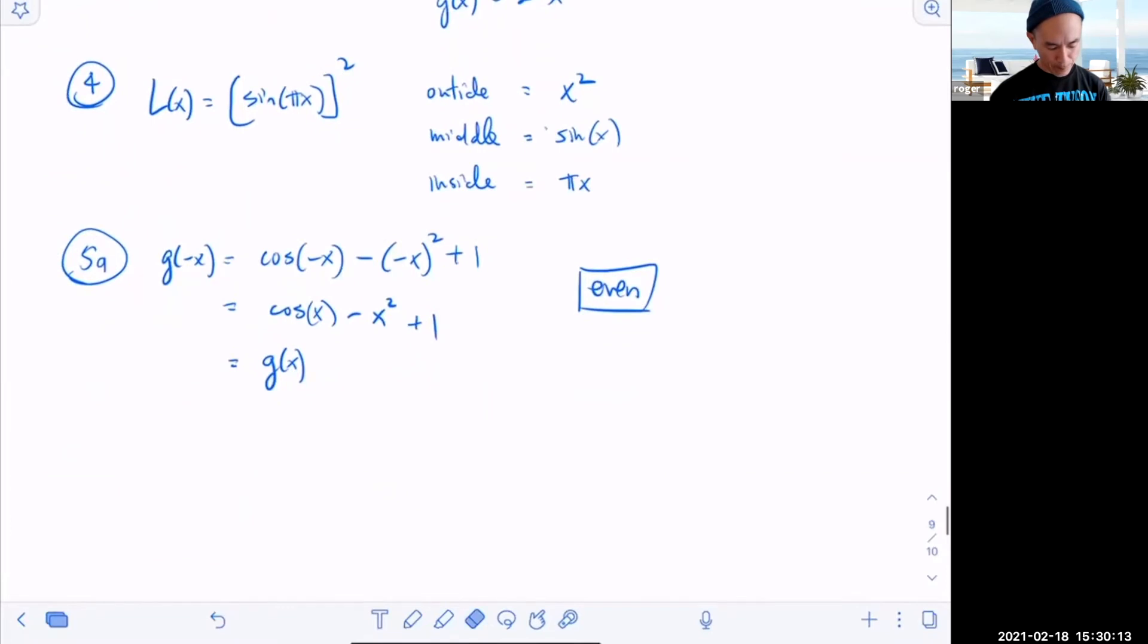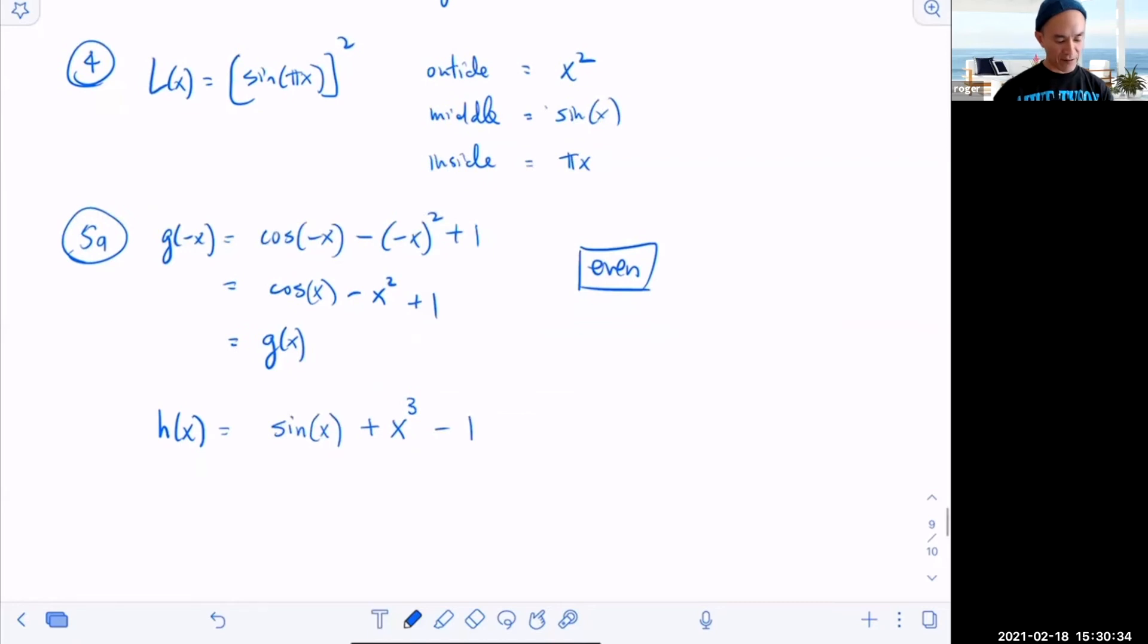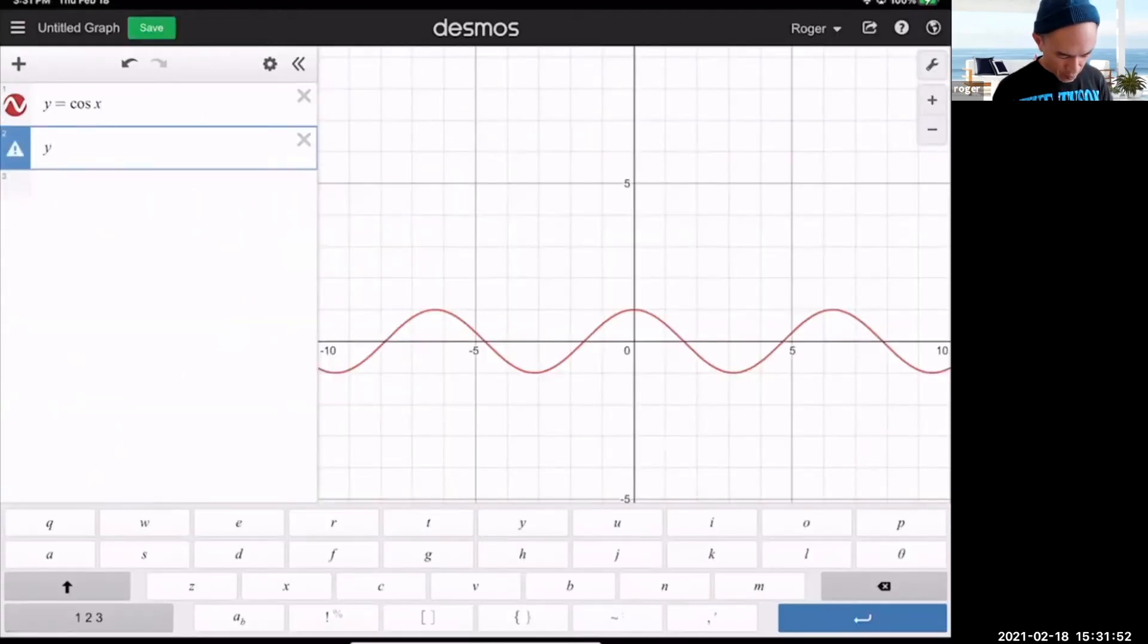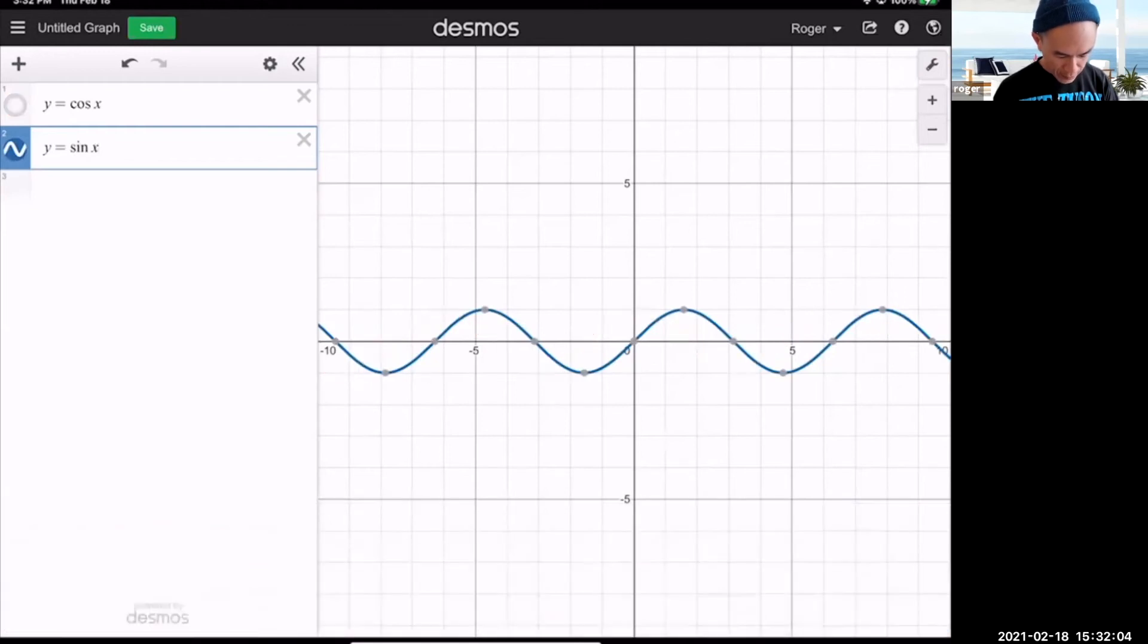Let's take some time to do another example. Let's do h of x equal to sine of x plus x cubed minus one. Call this guy 5b. I don't know if you recall, but the sine x is supposed to be odd. So let me just show you a graph of that so you can see. Maybe we can hide the cosine. So when you see, you should see on your screen this graph of sine. And I want you to visually try to imagine rotating it 180 degrees, and you'll see that you still get the same graph.